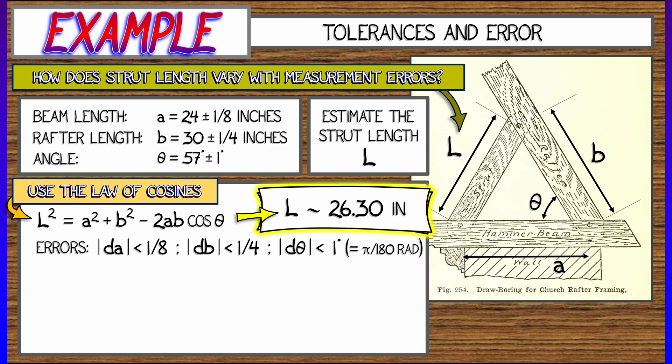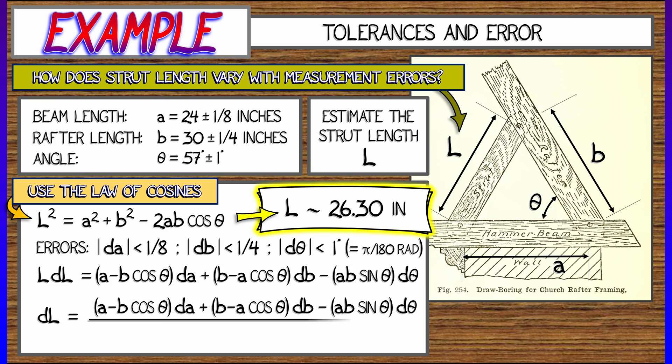So I only know A up to an eighth of an inch. That means DA is bounded above by one eighth. I know B up to a quarter of an inch. So DB is less than a quarter. And D theta is less than one degree. Oh, hey, let's convert that to radians. Okay. Implicitly differentiate the law of cosines. I get LDL equals a bunch of other stuff. Solve for DL. And I'm going to get DL equals quantity A minus B cosine theta times DA plus quantity B minus A cosine theta times DB minus A times B times sine theta times D theta, all of that divided by L. Okay, that's the part I wanted to get to.